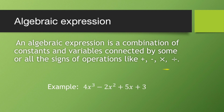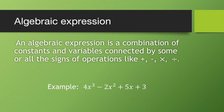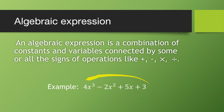In this expression, 4 is a constant and x is a variable. We are using addition and subtraction signs to connect the terms. So this expression — 4x³ - 2x² + 5x + 3 — is called an algebraic expression.